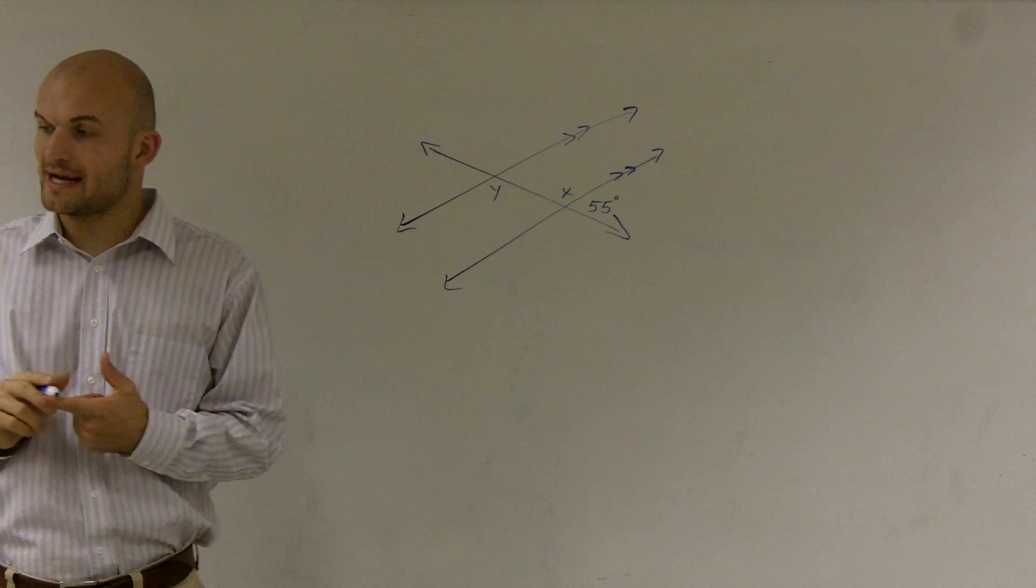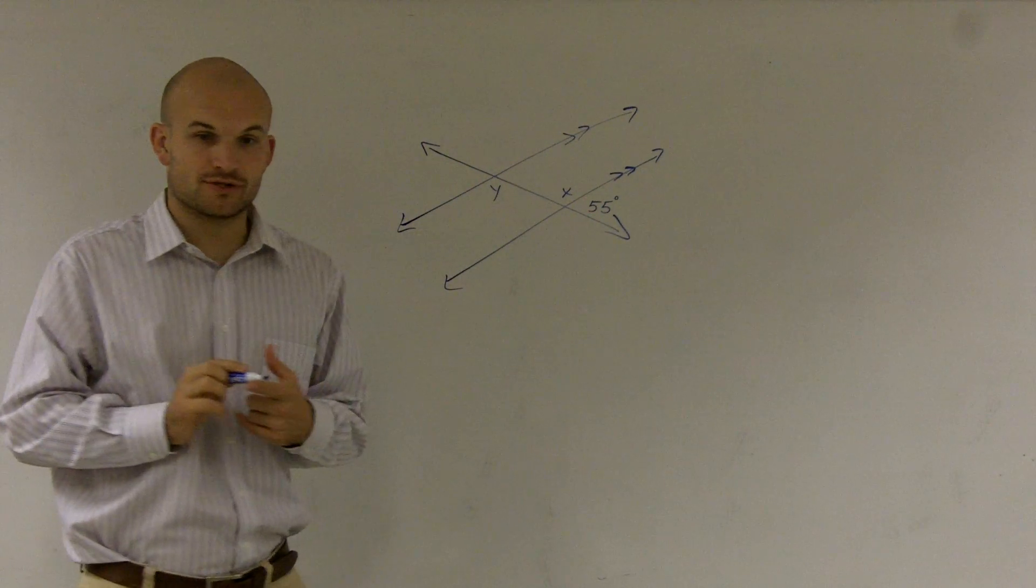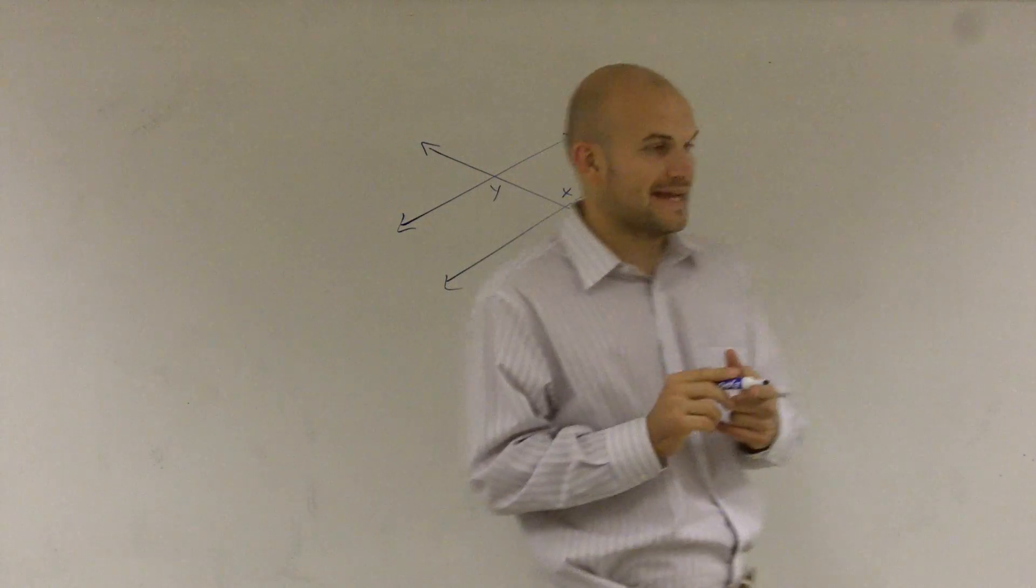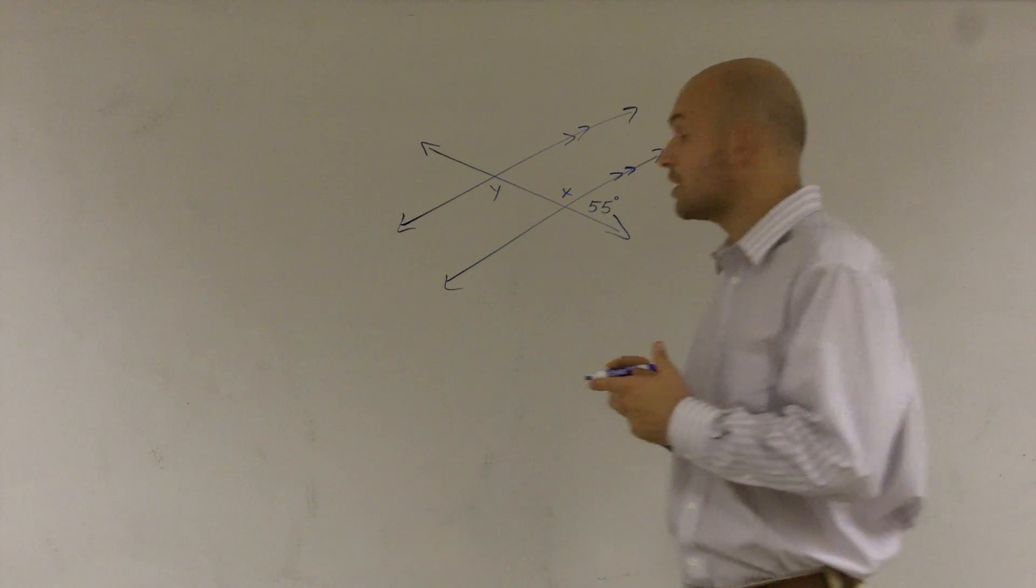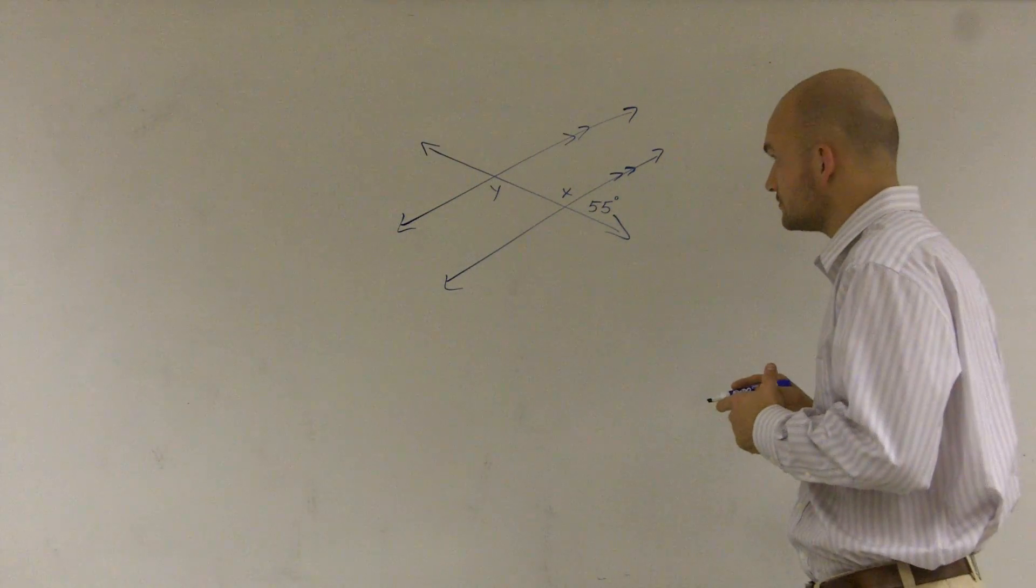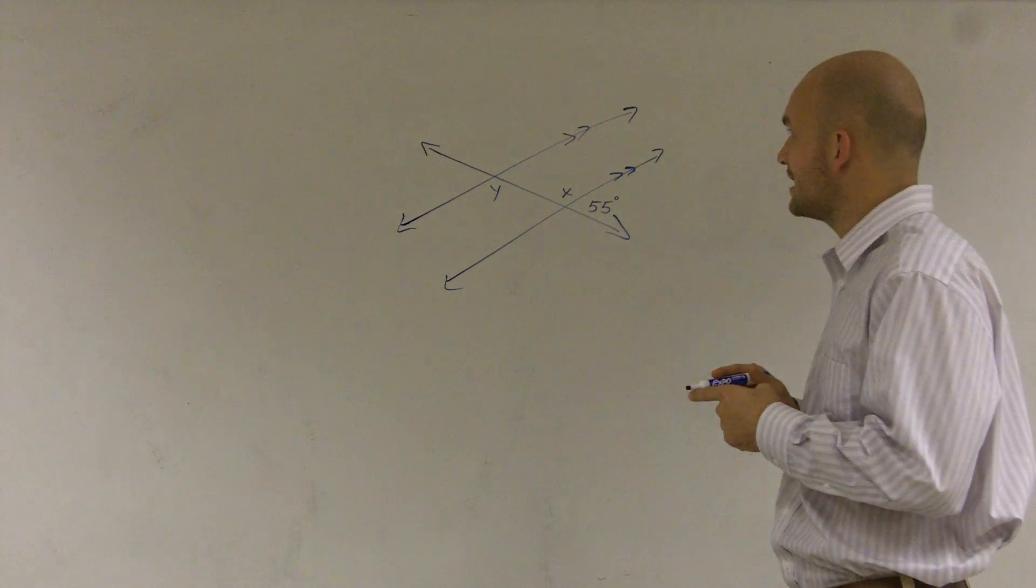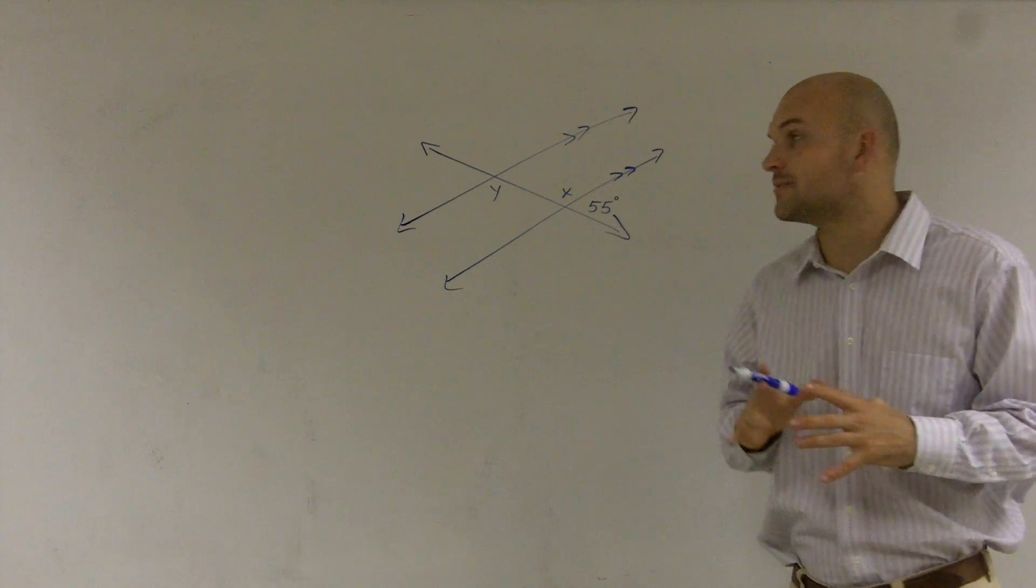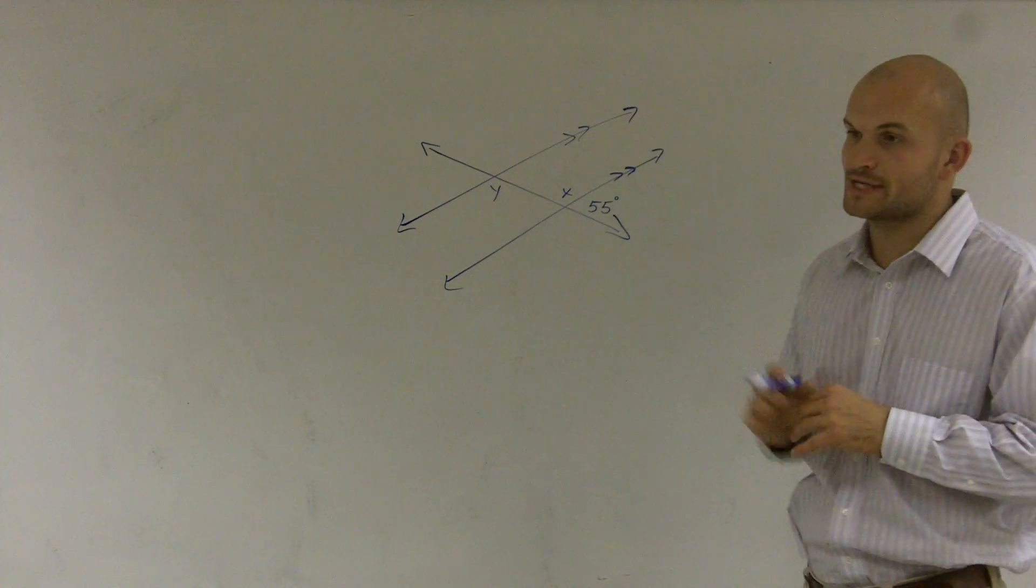What we have is corresponding angles are equal to each other. We have alternate interior angles are equal to each other. Same side interior are equal to 180. And same side exterior are equal to 180. So there's a lot of things that happen once we get parallel lines marked by a transversal.